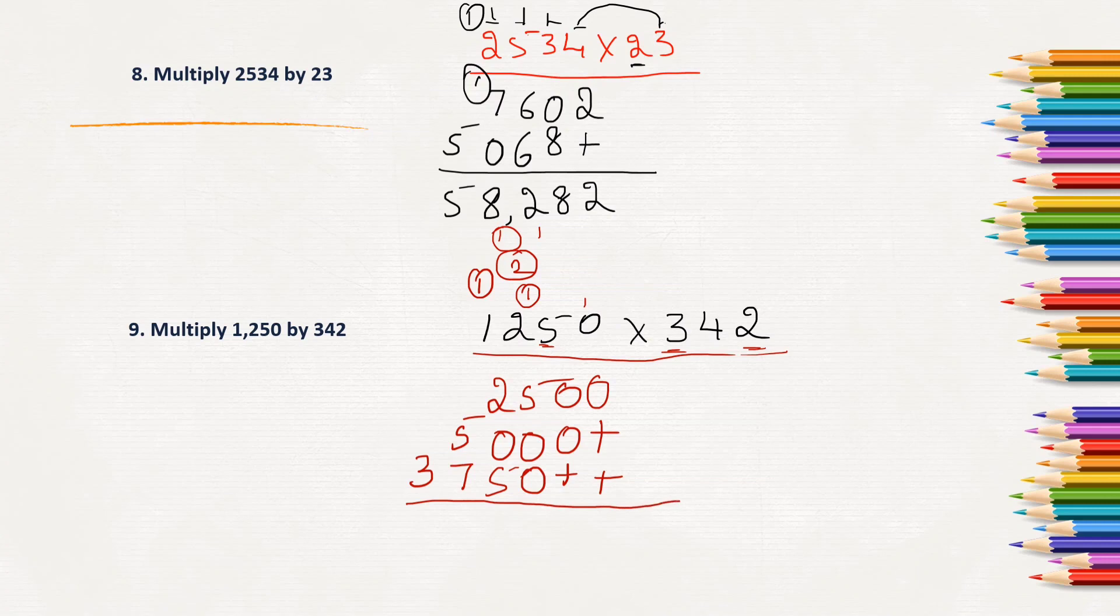Now, let us add all the products. So, 0 and nothing is 0 itself. Again, 0 and nothing is 0 itself. 5 and nothing is 5 itself. 5 plus 2 is 7. 7 plus 5 is 12, 1 carry. 3 plus 1, 4. So, the product of 1250 into 342 is 427,500.